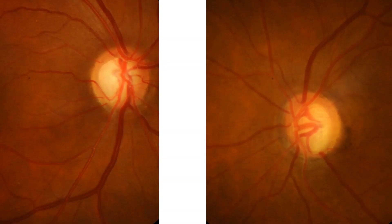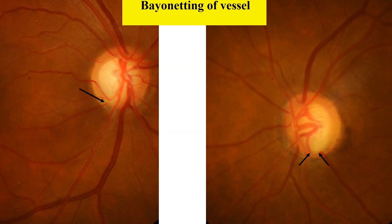The blood vessels bend or kink sharply when they pass over the edge of the cup or in areas of significant neuro-retinal rim loss. Visualization of the course of a particular blood vessel is temporarily lost as it passes under the overhanging edge of the cup and makes a sharp bend as it crosses the cup margin and re-emerges at the edge of the rim from the deeply excavated cup. This has been termed bayoneting because of the resemblance of the sharply angled vessel to the sharp angle of a rifle bayonet.